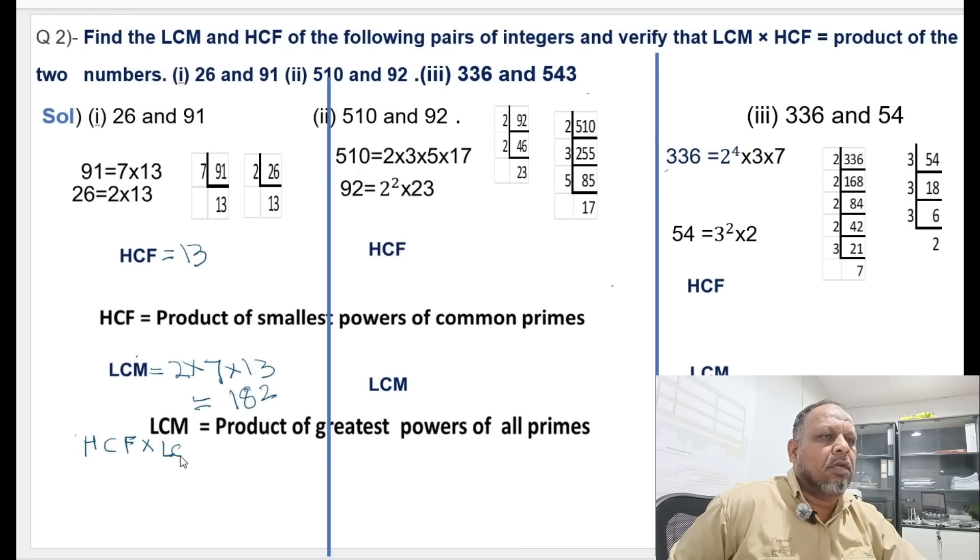HCF equals 13 multiplied by LCM which is 182. 13 into 182 equals to 2,366. So 2,366 is the value for HCF multiplied by LCM.